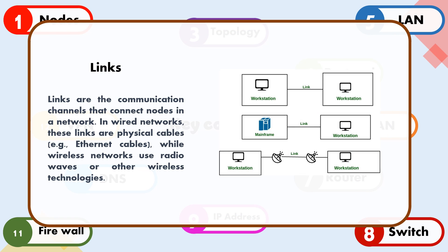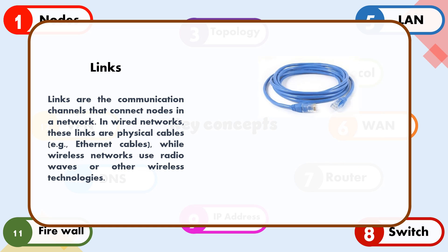Links are the communication channels that connect nodes in a network. In wired networks, these links are physical cables, e.g. Ethernet cables, while wireless networks use radio waves or other wireless technologies.